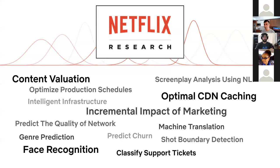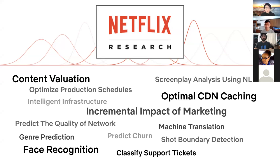We use data science to properly value intellectual property — figuring out what a TV show or movie is worth in dollars. We do a lot of research around video algorithms, audio algorithms, caching content geographically, and using machine learning for network quality prediction. We invest heavily in marketing titles, and we have a large experimentation framework primarily driven by R, so we're big on causal inference as well.